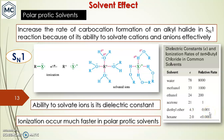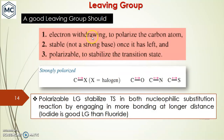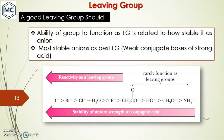The fourth factor is the leaving group. Characteristics of a good leaving group: it should be electron withdrawing so it can polarize the carbon atom; it should be stable after it leaves, otherwise it will react again; it should be a weak base, not a strong base; and it should be polarizable, because a polarizable leaving group can stabilize the transition state in both SN1 and SN2. When the transition state is stabilized, the reaction proceeds faster.